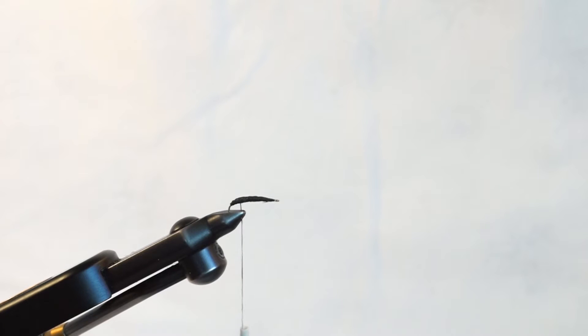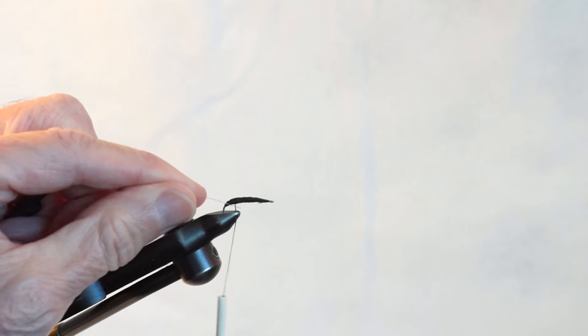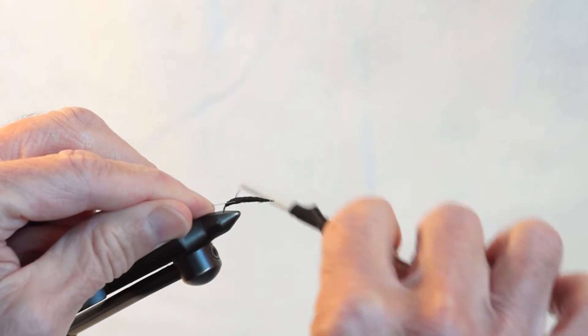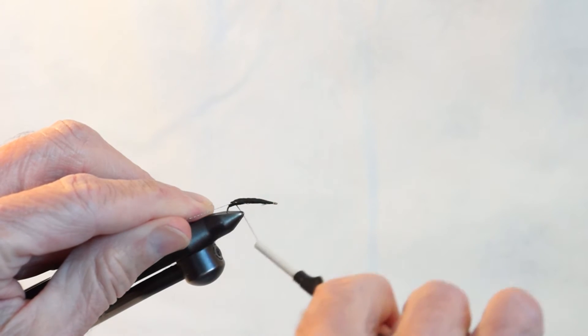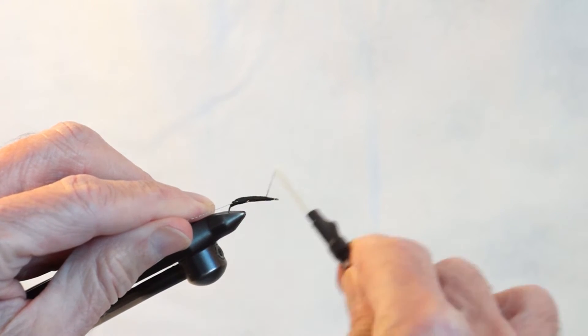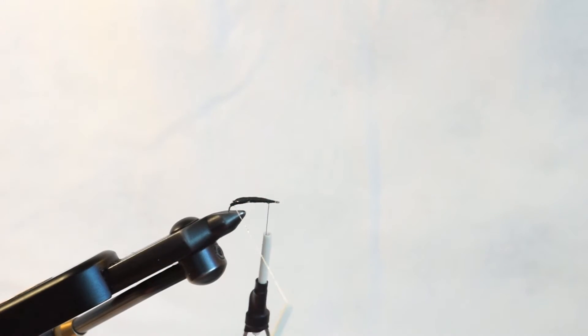There are some ways to speed up your work or make your work easier, maybe both. One way to do that is to have your ribbing material on a separate bobbin. Then you can wrap it under control.